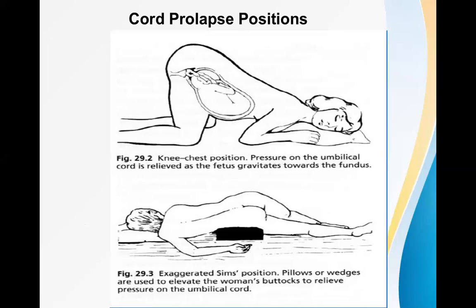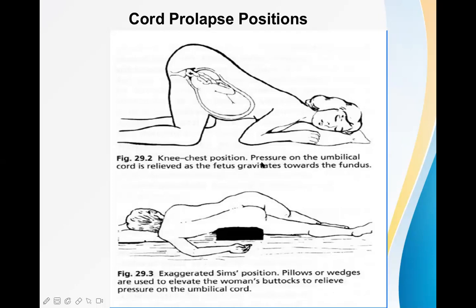Look at this picture — this is the knee-chest position. If we keep the lady in the knee-chest position, the umbilical cord compression definitely decreases because the presenting part of the baby will not descend further downward — rather it will go slightly upward — so there is no further compression of the prolapsed umbilical cord. Another position is the exaggerated Sims position, where pillows or wedges are used to elevate the woman's buttocks to relieve pressure on the umbilical cord. Knee-chest position is usually employed.